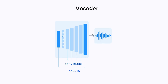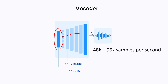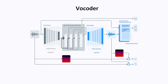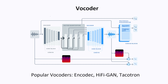The last and final piece of the architecture is the vocoder. This is basically a model that converts sequences of vectors into audio waveforms that sound natural. These waveforms are typically between 48,000 and 96,000 samples per second. It is not possible for transformer models to generate these audio samples directly because they are too long — that's why a vocoder model is needed, to convert shorter sequences of vectors into audio waveforms. Vocoder models are typically trained with adversarial and discriminator models to sound natural. A few popular vocoders include EnCodec, HiFi-GAN, and Tacotron.